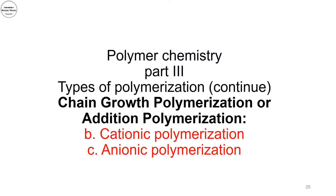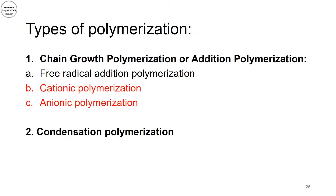Hello everyone. Today we will continue talking about chain growth polymerization, or what we call addition polymerization. Specifically, we will talk about anionic and cationic polymerization. We talked before in the previous video about the first part of chain growth polymerization, which was free radical addition polymerization. Here we will cover cationic and anionic polymerization. Remember that all those types of polymerization — chain growth or condensation — are different types of chemical polymerization.